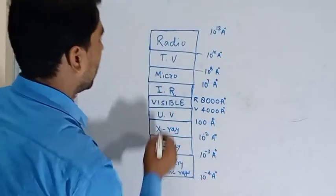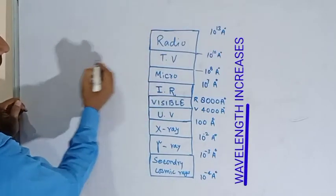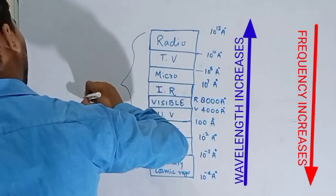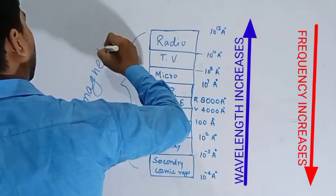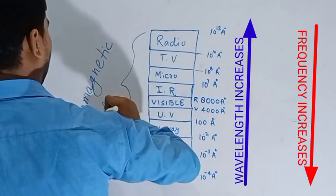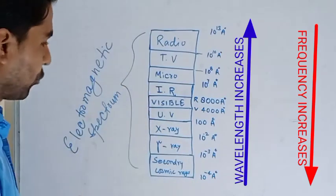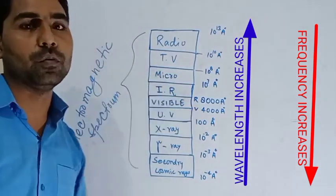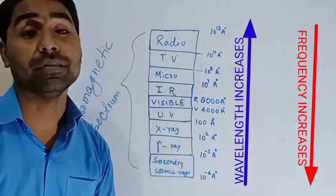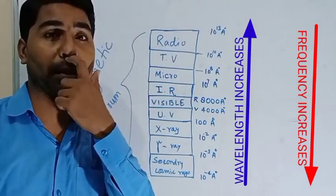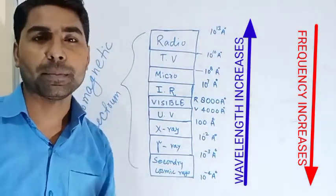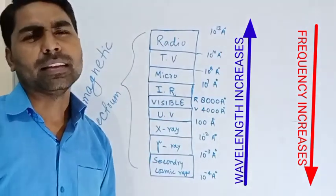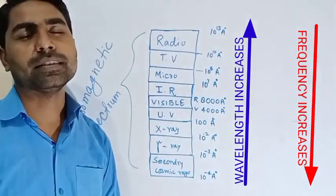All of these together form the electromagnetic spectrum. Out of these, only the visible region from red to violet is visible to us — the rest are invisible, meaning they do not excite our retina. The next topic we will discuss in the next lecture. Thank you.